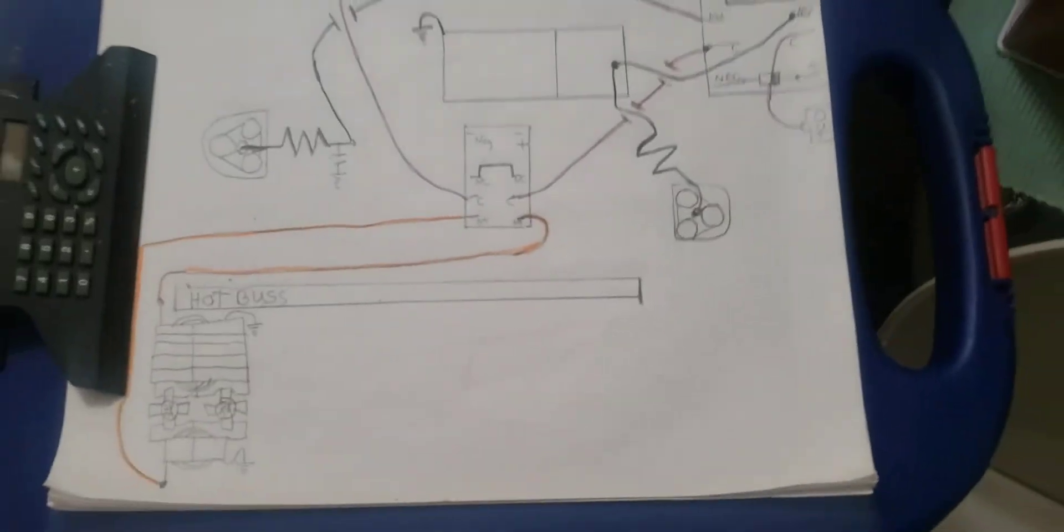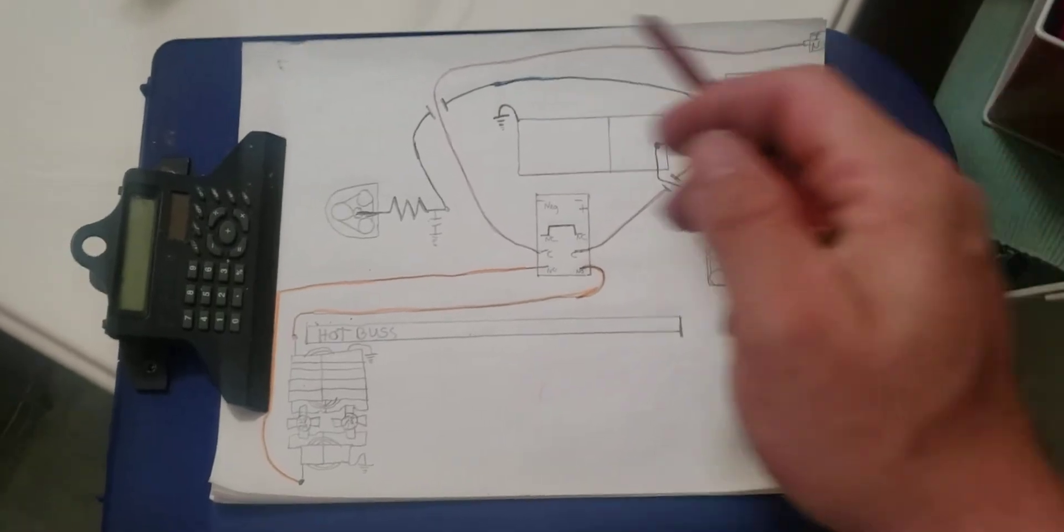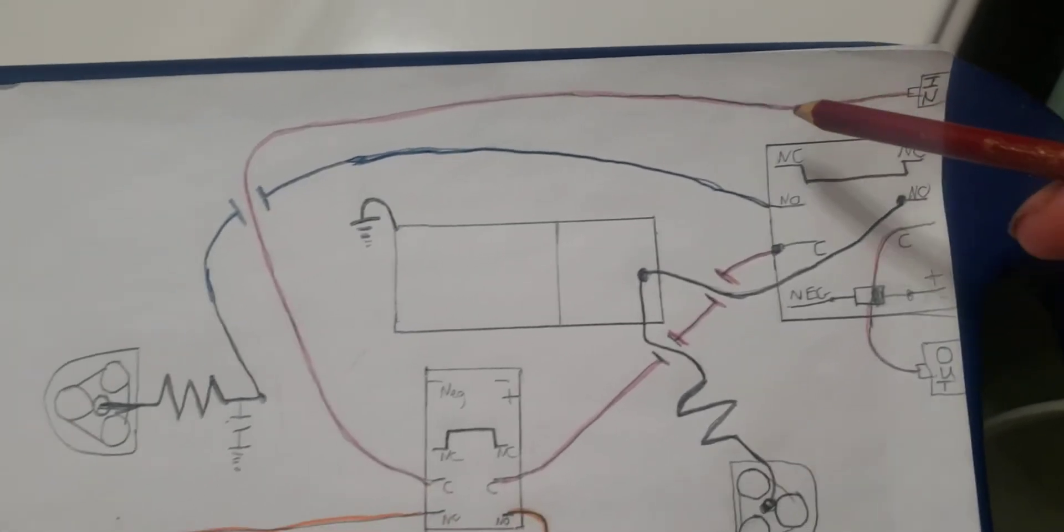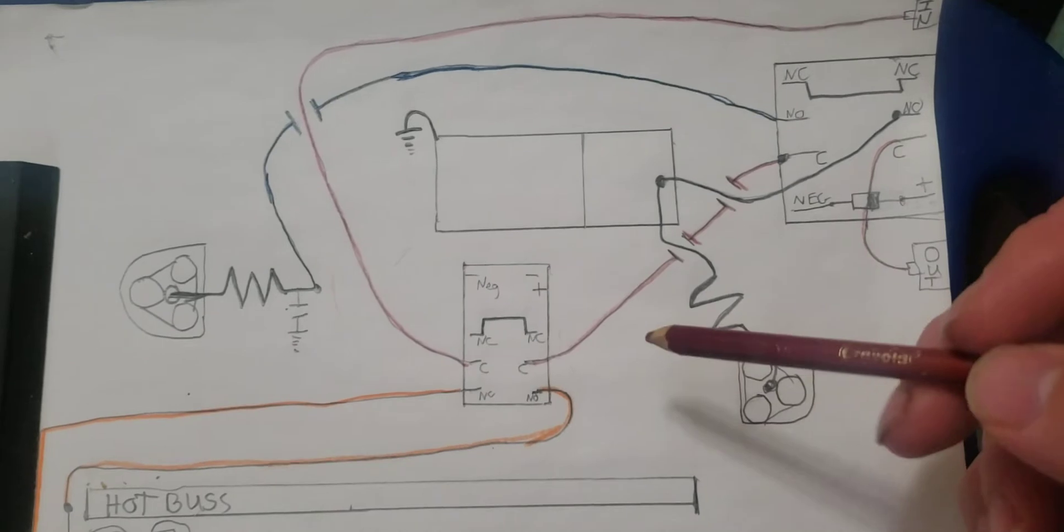All right, brother, here she is. I drew in red what would be the complete path if both relays are off. See? RF signal comes in. Both of these relays are off.